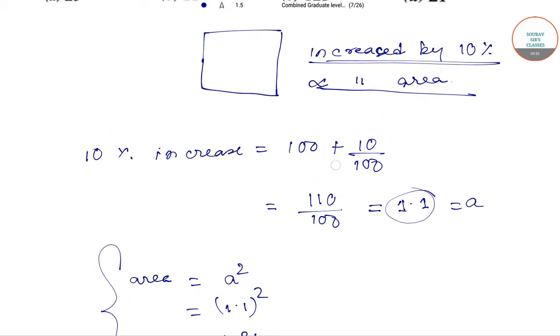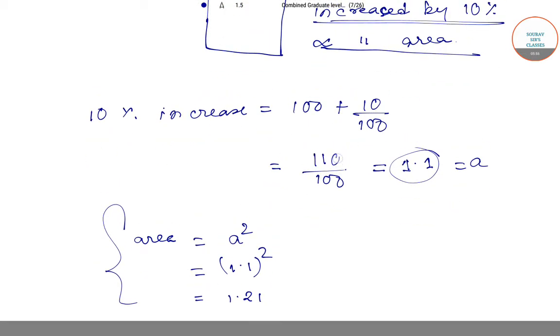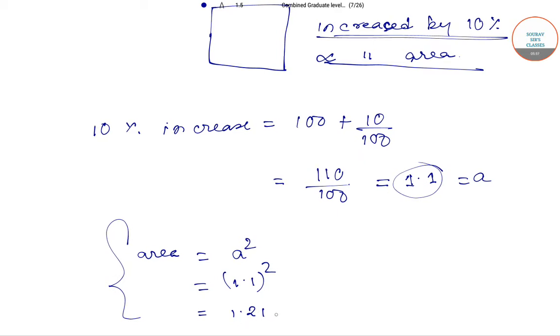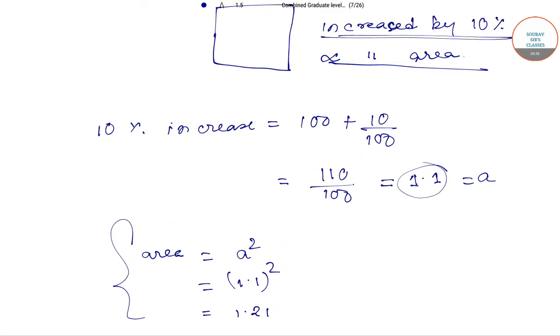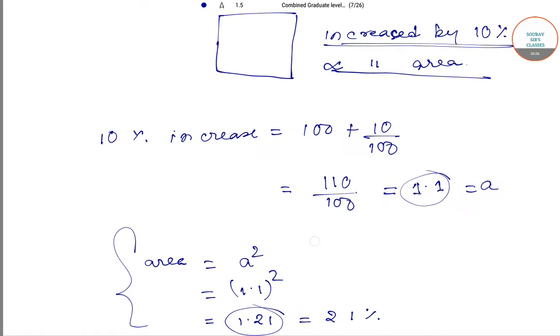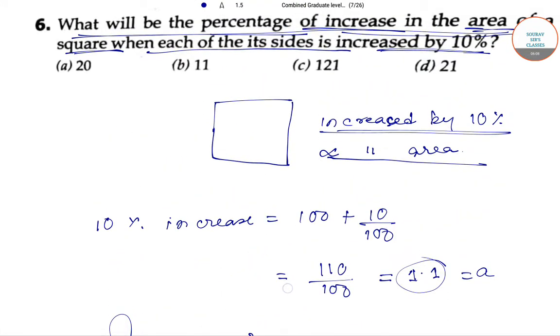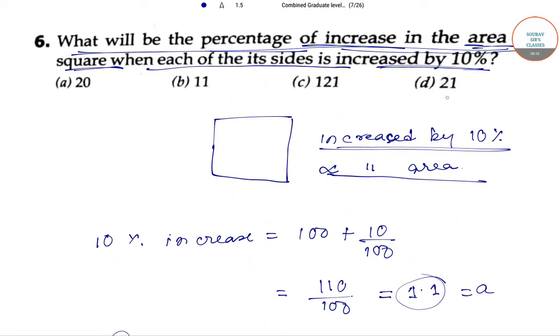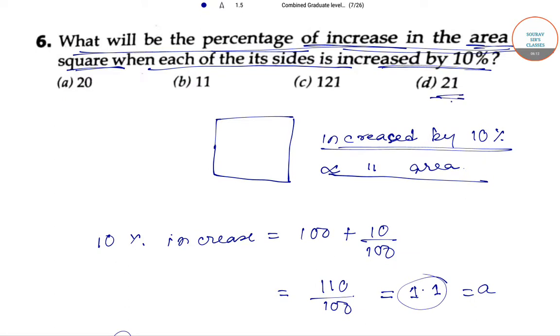Now if we have increased the sides by 10%, the area will be 1.21. If we do it in percentage, we'll get 21%. So from our options, we have 21% in option D. Option D will be our correct answer for this question.